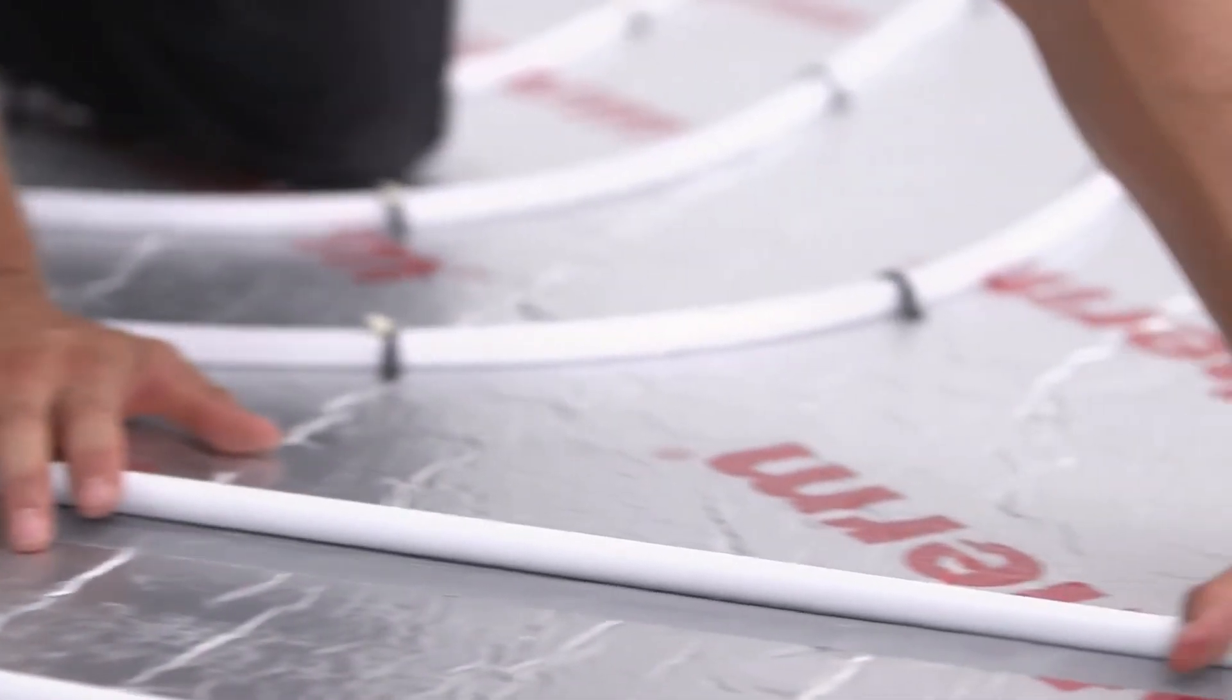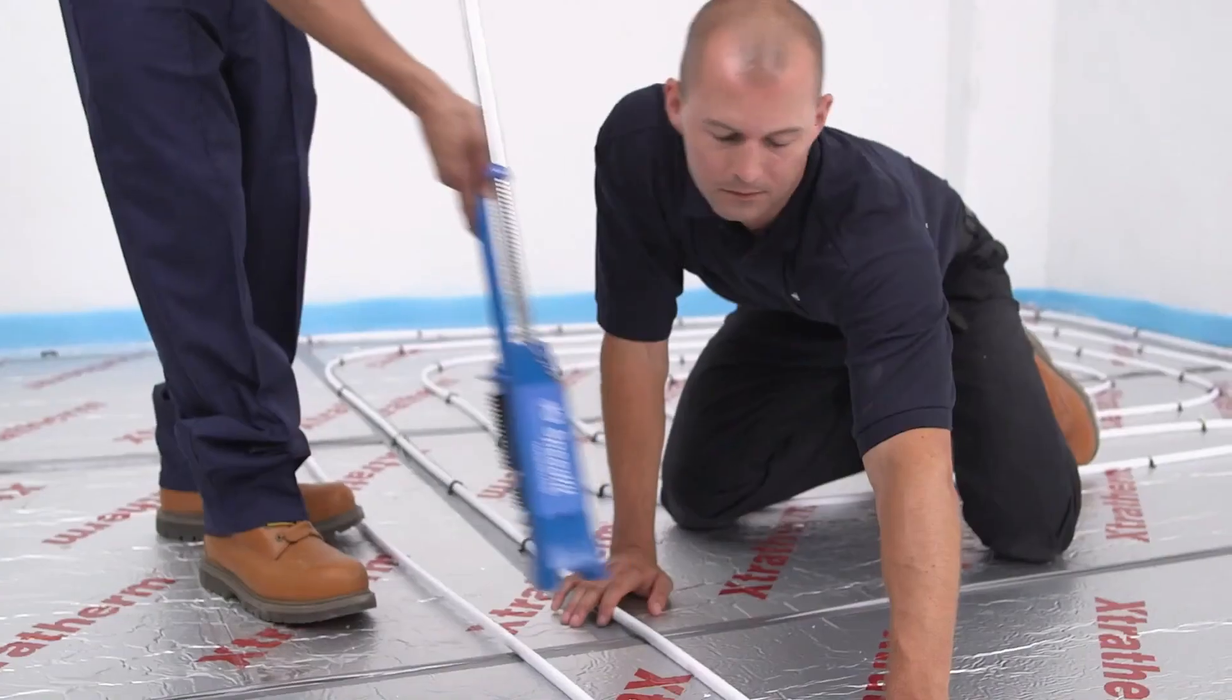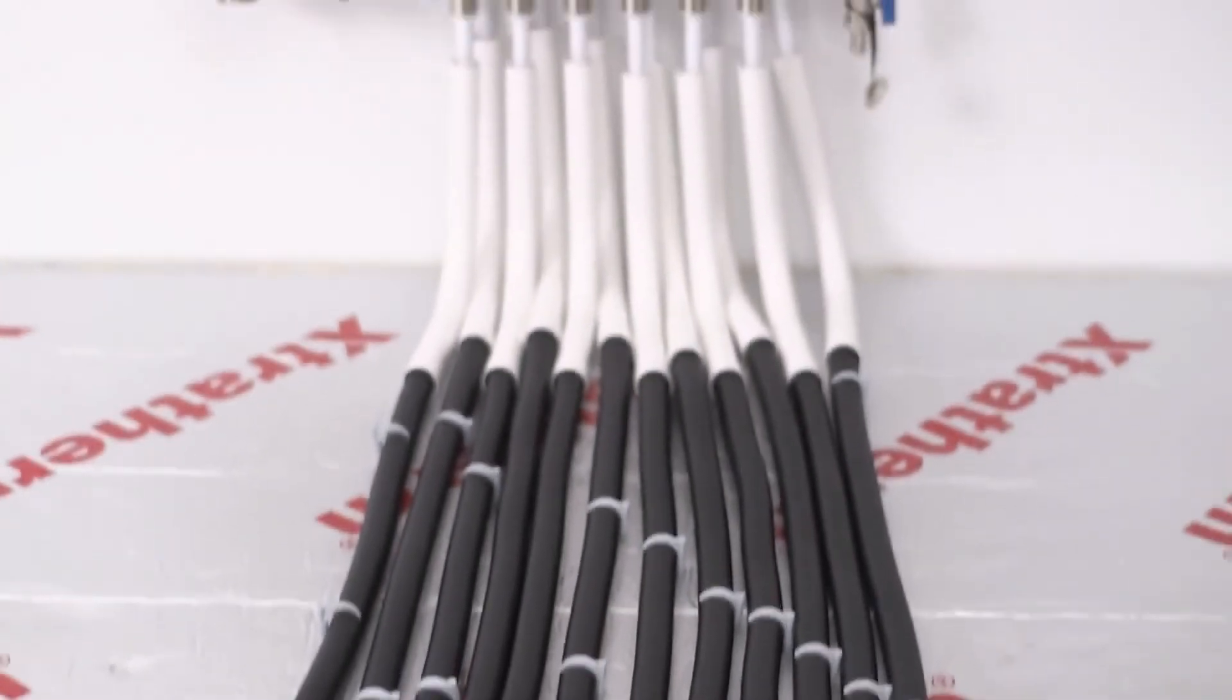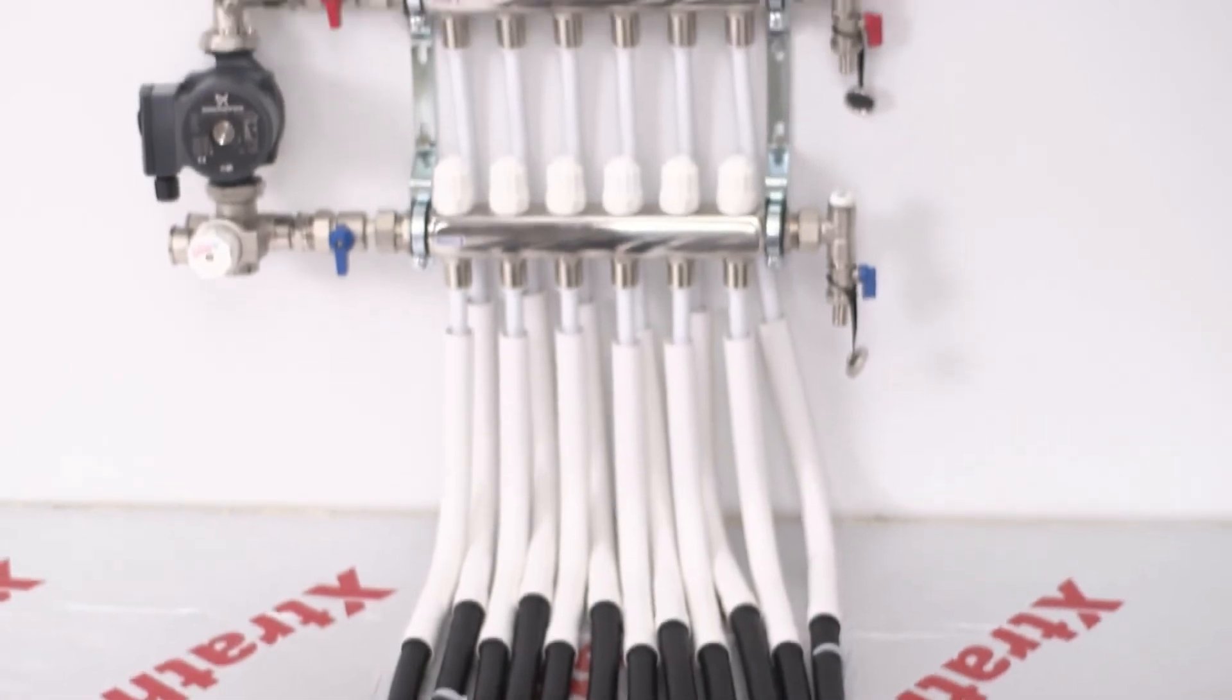When the circuit is completed, ensure you've left enough space for any subsequent circuits to be laid. You may now run the pipe work you're working with back to the manifold and connect it.